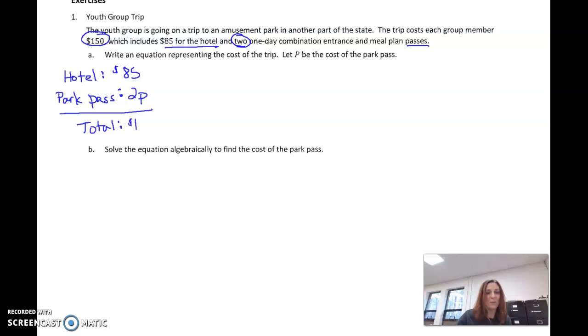And that's a total of $150. Now, again, you've seen me do this before and you're going to see me do it again. A lot of times I write what I know off to the side because it makes writing an equation that much easier. I'm going to pay $85 for my hotel. I'm going to also buy two park passes. Altogether, that's going to give me a total of $150. This $150 includes my hotel and the two passes.